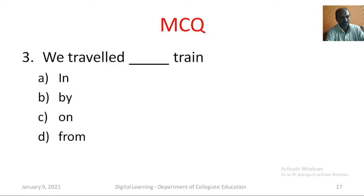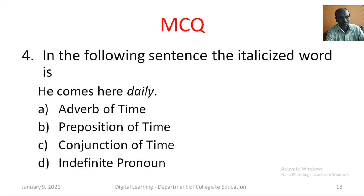Question number three: we travel dash train. Option A: in. Option B: by. Option C: on. Option D: from. Yes, you are correct. The correct answer is option B, by. Question number four: in the sentence he comes here daily, the word daily is dash. Option A: adverb of time. Option B: preposition of time. Option C: conjunction of time. Option D: indefinite pronoun. Yes, you are correct. The correct answer is adverb of time.